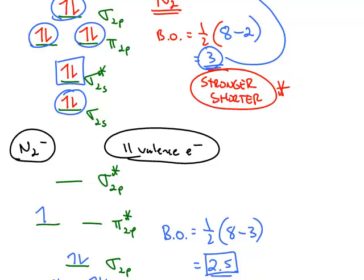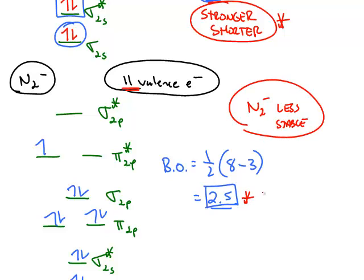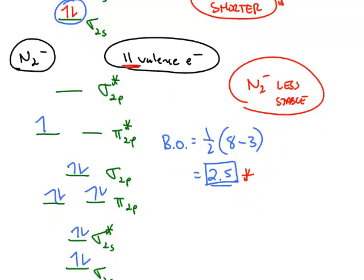Another way we can make this comparison is putting in this extra electron reduces the stability of N2. N2 minus is less stable than diatomic nitrogen with zero charge because it gives you a lower bond order.